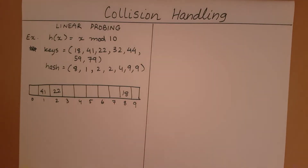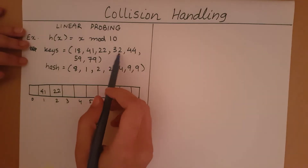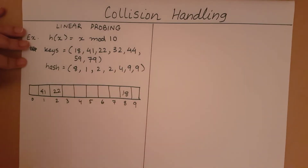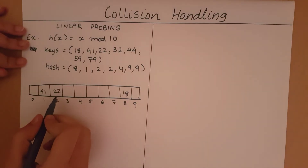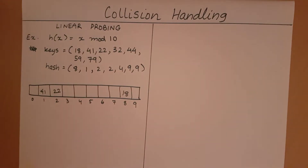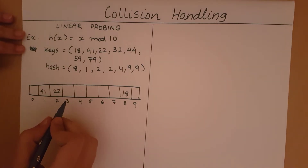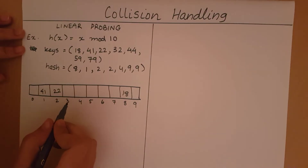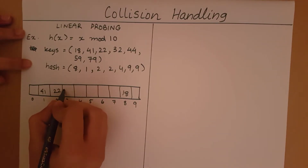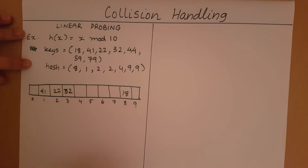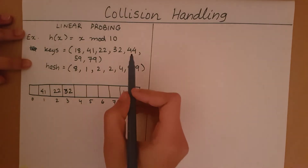Now we come to a collision case. 32 mod 10 is equal to 2, but when we go to index 2, this index has already been filled. So I need to check the next index. Is the next index free? Yes, the next index is free. So I can store 32 there. Now I have 44.